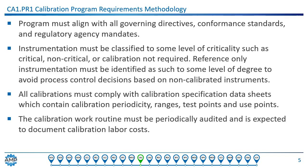Reference-only instrumentation must be identified as such to avoid process control decisions made on non-calibrated instruments. All calibrations must comply with calibration specification data sheets, which contain calibration frequency or interval, ranges, test points, and use points. Beyond providing correct and consistent calibration instructions for the technician, these data sheets are very important toward proving calibration and timeline in the event of a deviation investigation. This supports audit trails during periodic audits as well as investigation for corrective actions. The calibration work routine must be periodically audited and is expected to document calibration labor cost, and continuous improvement should be a goal of any calibration program.